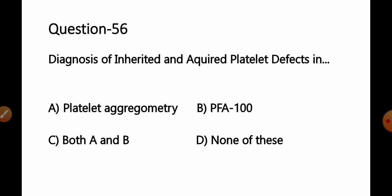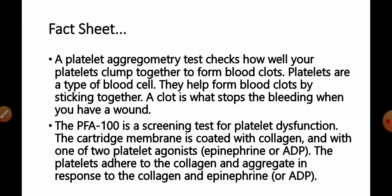Question number 56: Diagnosis of inherited and acquired platelet defects — option A: platelet aggregometry, B: PFA-100 (also known as platelet function assay 100), C: both A and B, D: none of these. Platelet aggregometry checks how well platelets clump together to form blood clots. PFA-100 is a screening test for platelet dysfunction.